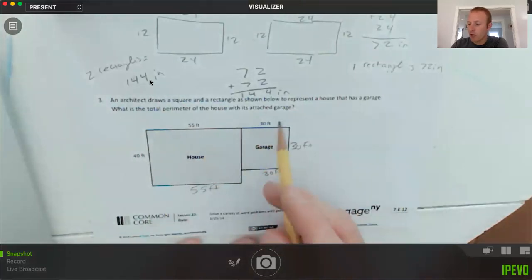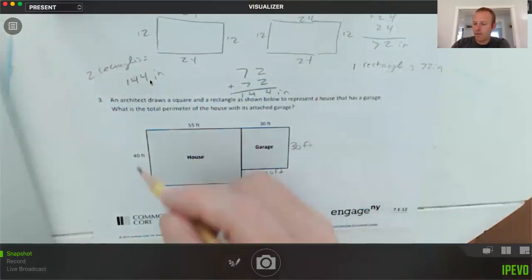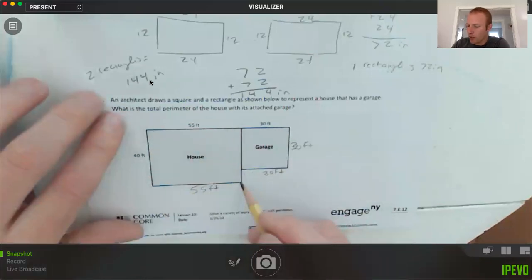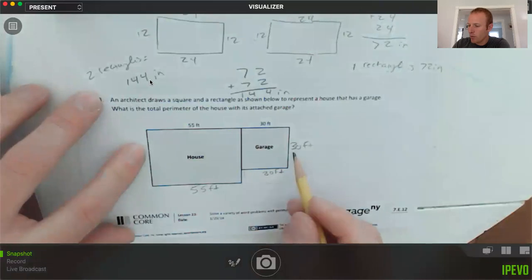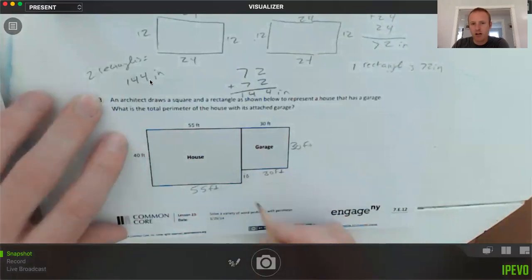Now the last and most challenging part is to figure out what this little vertical part is over here. So from here to here is 40. So if I drew this over, it would be 40 feet. This only goes to 30, so the difference between 30 and 40 is 10. So that missing section is 10 feet.